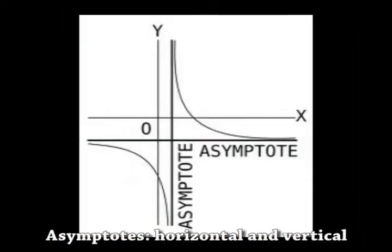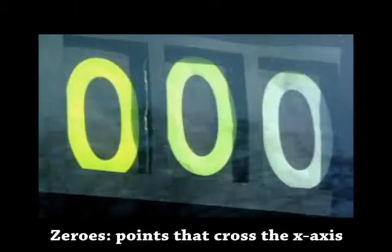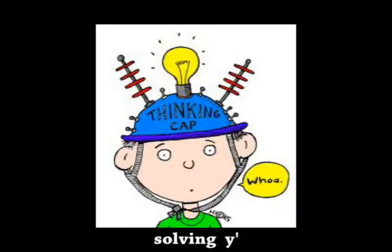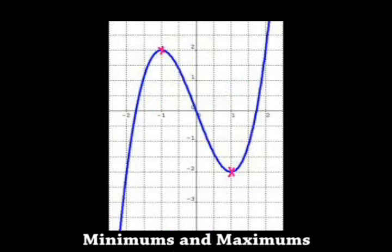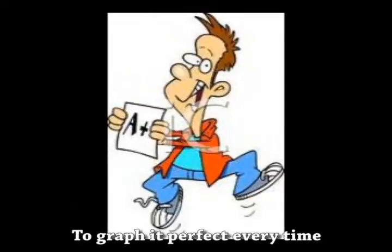First the asymptotes, horizontal and vertical, building block curves, connecting values and critical zeros tell you where we cross the x-axis. Solving y-prime, finding mins and maxes. Points of inflection from y double prime, that's all you need, do graphing perfect every time.